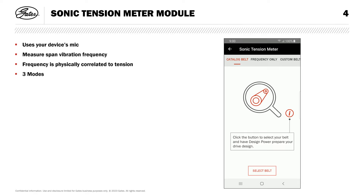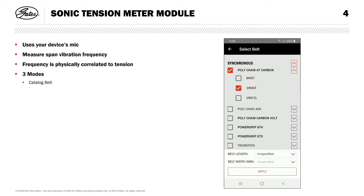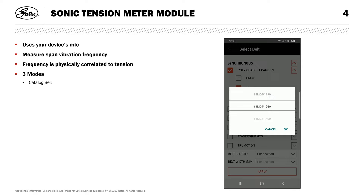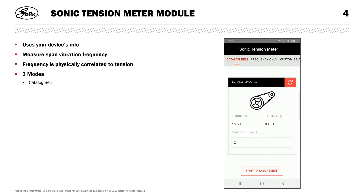This frequency is correlated, based on physical properties, to the tension in your belt span. The module features three modes. Catalog belt mode allows you to choose a belt from Gates product offerings. The application pulls the required physical constants for your selected belt from our product database. You'll also need to know your belt length and belt width, both typically printed on the back side of our products and available on the drive report from DesignFlex Pro or Gates Design IQ, our multi-point drive design module available in Design Power for PC. You'll also need to know the length of the span you're measuring. You can find this on your DF Pro or DIQ report, or you can measure it manually. It can be tricky to visualize the exact point where the belt engages the pulley, so we recommend using our software tools to find this value.